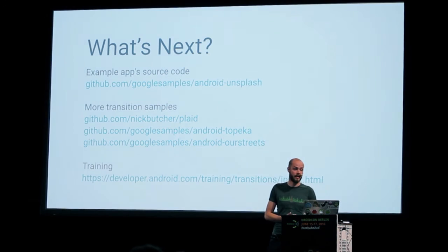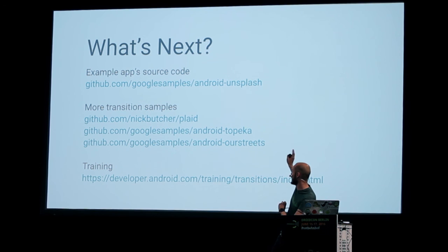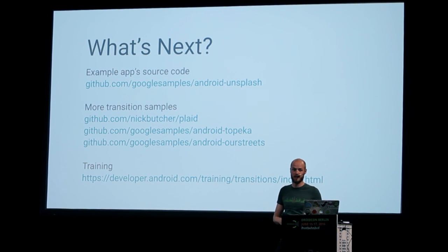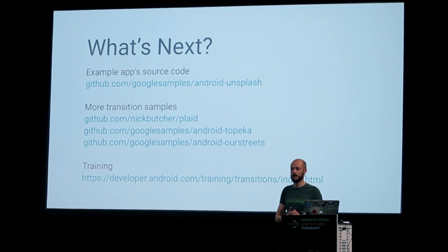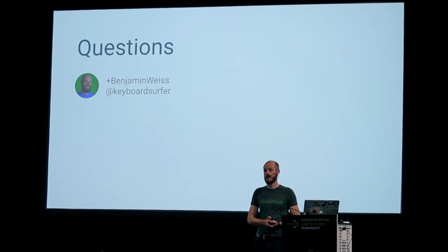That was faster than I expected, but all the source code is on Google Samples — android.onlaunched. There are a couple more transitions, animation samples, and material design samples you definitely should take a look at. Nick Butcher's Plaid app is amazing — it's been talked about today. Topeka is another app that is slightly less complicated and does the same thing as well. Also take a look at the training for transitions. Thank you very much, and I will open the floor to questions.